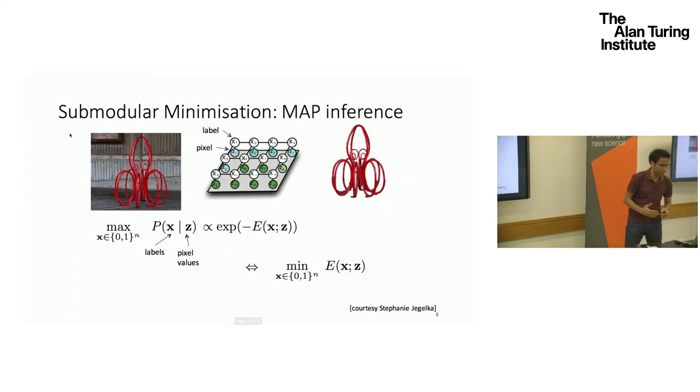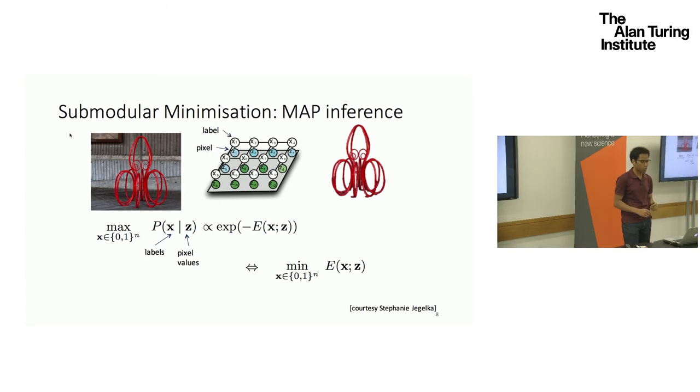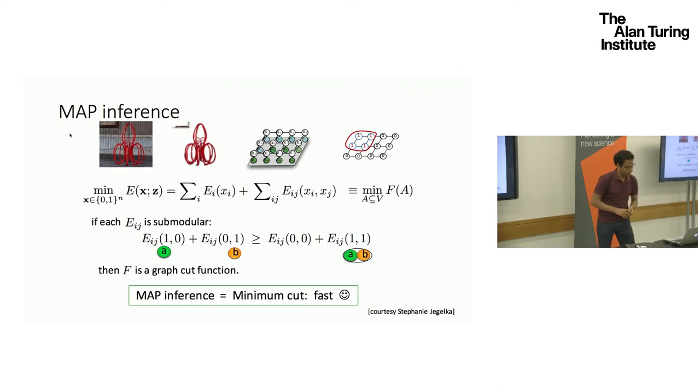Now, in general, although we know that submodular minimization is easy, meaning that we can do it in polynomial time, but it is unlikely to scale very well for computer vision problems. If you think of it, in general, submodular minimization takes order n raised to the power five time, and that is too much for computer vision applications where we are probably dealing with millions of pixels. So it doesn't scale very well. And then we try to think, is there any additional structure in the submodular functions such that I can solve it more quickly.